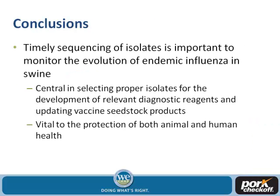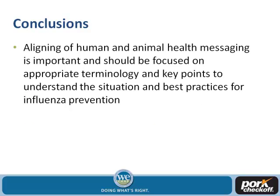Looking back, our conclusions are that timely sequencing of isolates is important to monitor endemic influenza in swine — central to animal health, central to public health, and central to selecting proper isolates so we can have relevant reagents and update reagent and seed stocks. Knowing that the human health population can monitor this and be prepared is important, and we actively share information back and forth between public health and animal health.